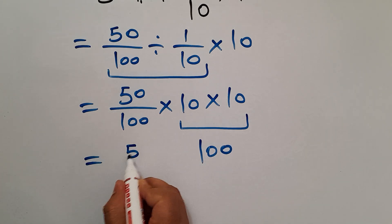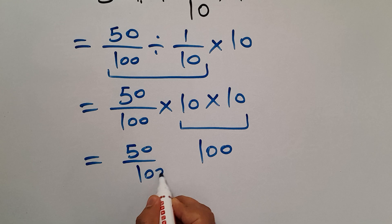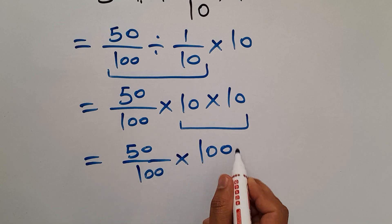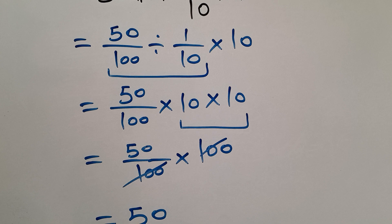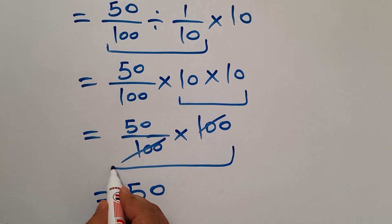we have 50 over 100, then times 100. This 100 and this 100 can cancel each other out, so we have just 50. So our final answer to this problem is just 50.